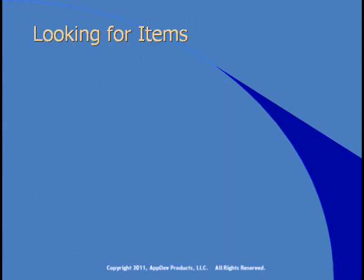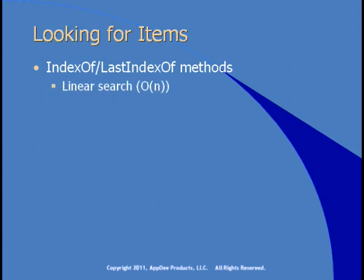In order to find items in the list, you can use the IndexOf or LastIndexOf methods. These are both linear searches — on the order of N. As you double the size of the list, you double the length of time it takes to find items using these methods. You can use the Contains method to determine if an item is in the list, but this too performs a linear search.